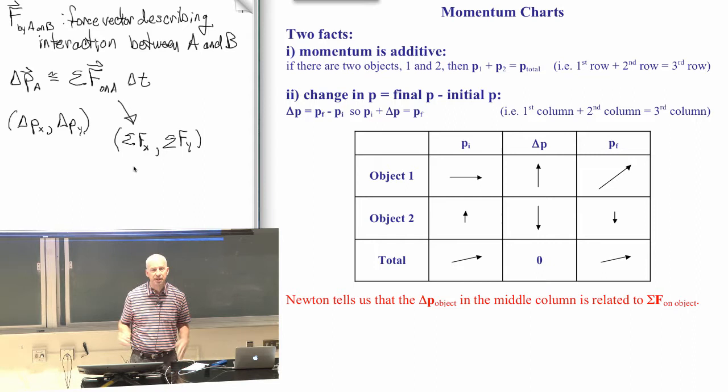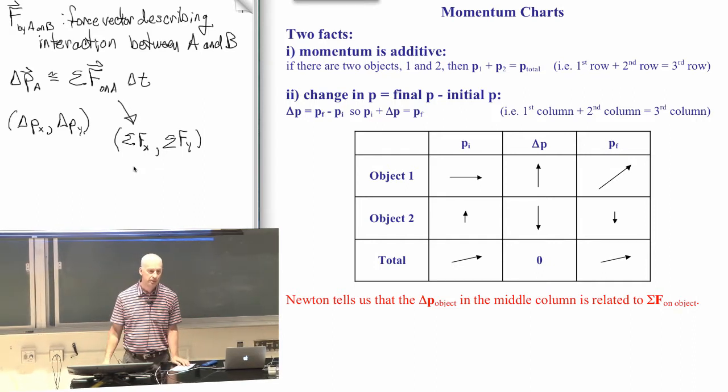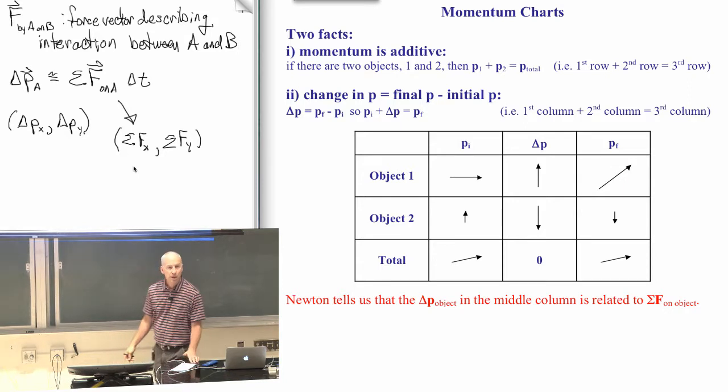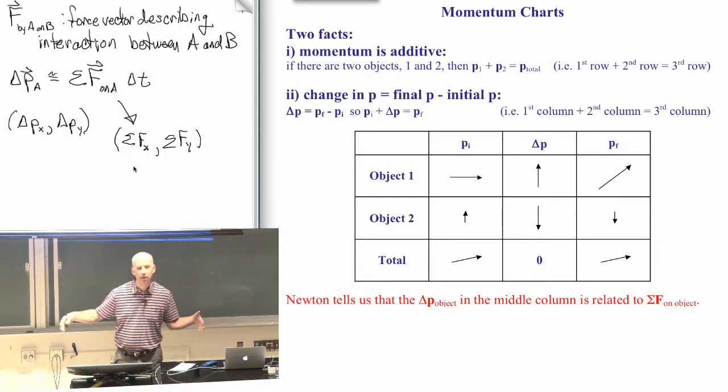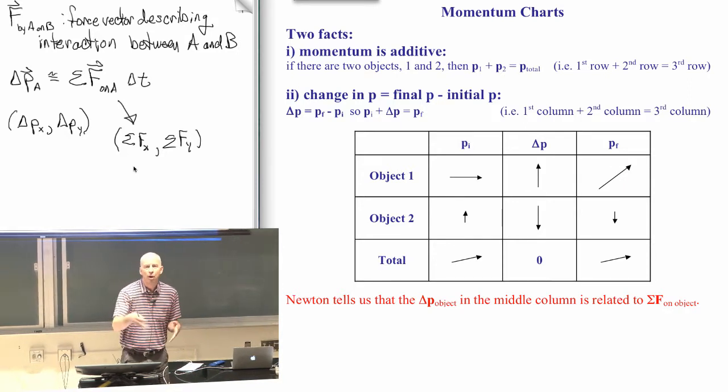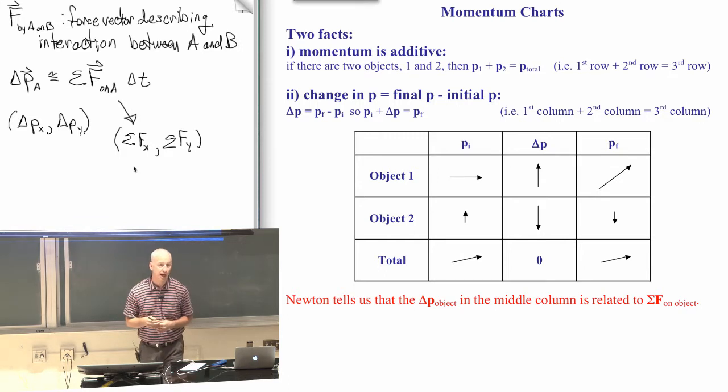That sum of the x components is the x component of the sum of the vectors. So you want to know the horizontal component of all the forces added together. Add all the horizontal components together with the right sign.